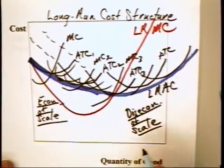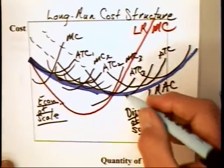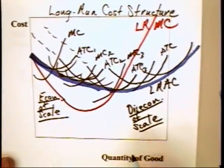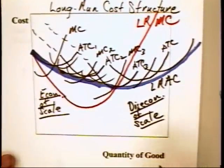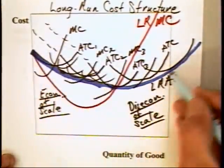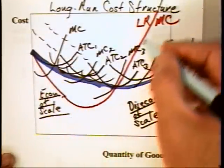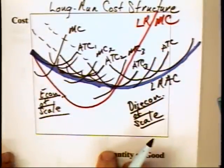Then, beyond some point, there's going to be diseconomies of scale normally associated with growing communication problems, growing principal agency problems. Once you get this long run average cost curve, you can then deduce the long run marginal cost curve.